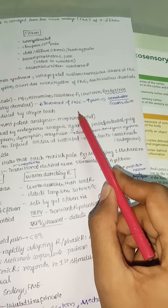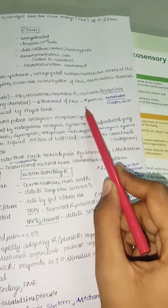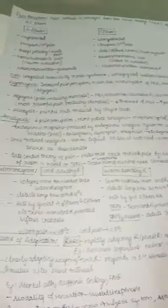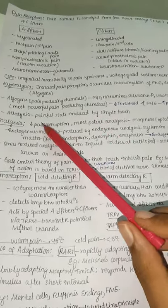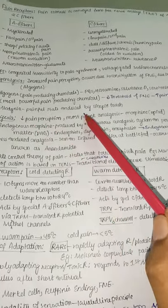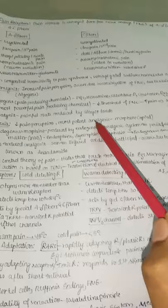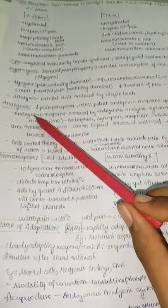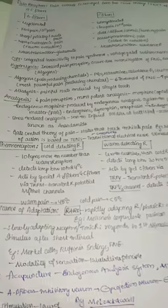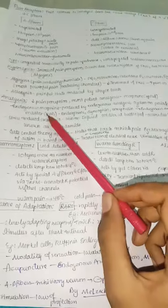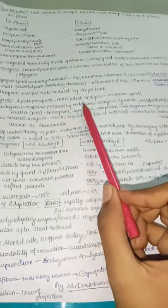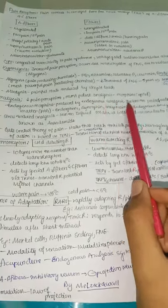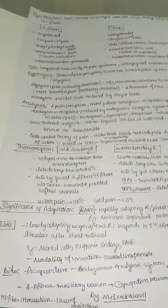The process of lowering the threshold of free nerve endings to increase pain perception is called sensitization. Allodynia is a painful state induced by simple touch — just touching causes intense pain.